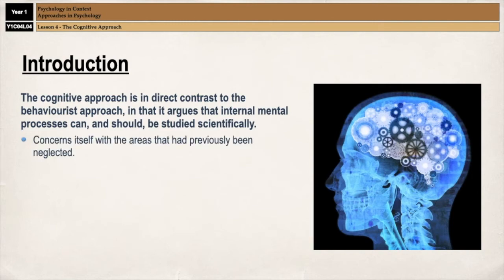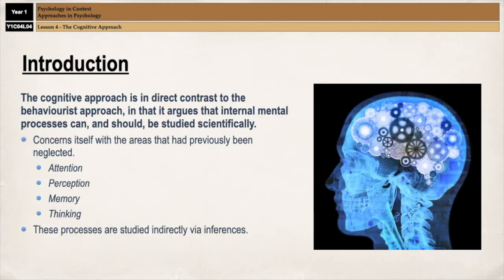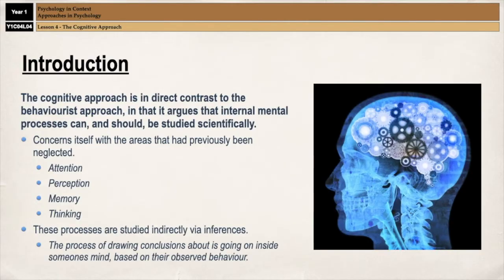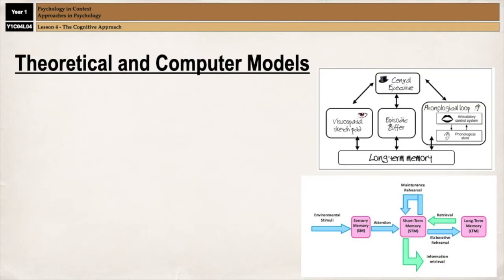These include things like attention, perception, memory, language, and thinking. These processes occur in the mind and are therefore private processes, and so they are studied indirectly via inferences. Inferences refers to the process of drawing conclusions about what is going on inside someone's mind based on observed behaviour.